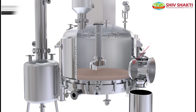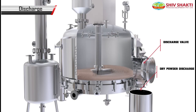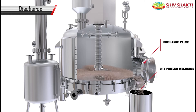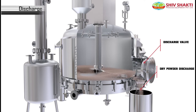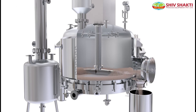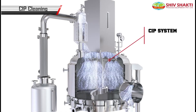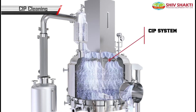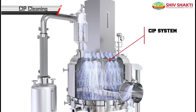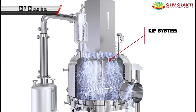Further, the dried powder is discharged and collected inside the bin. CIP cleaning is used to clean the machine from inside, removing any leftover powder present inside the machine.